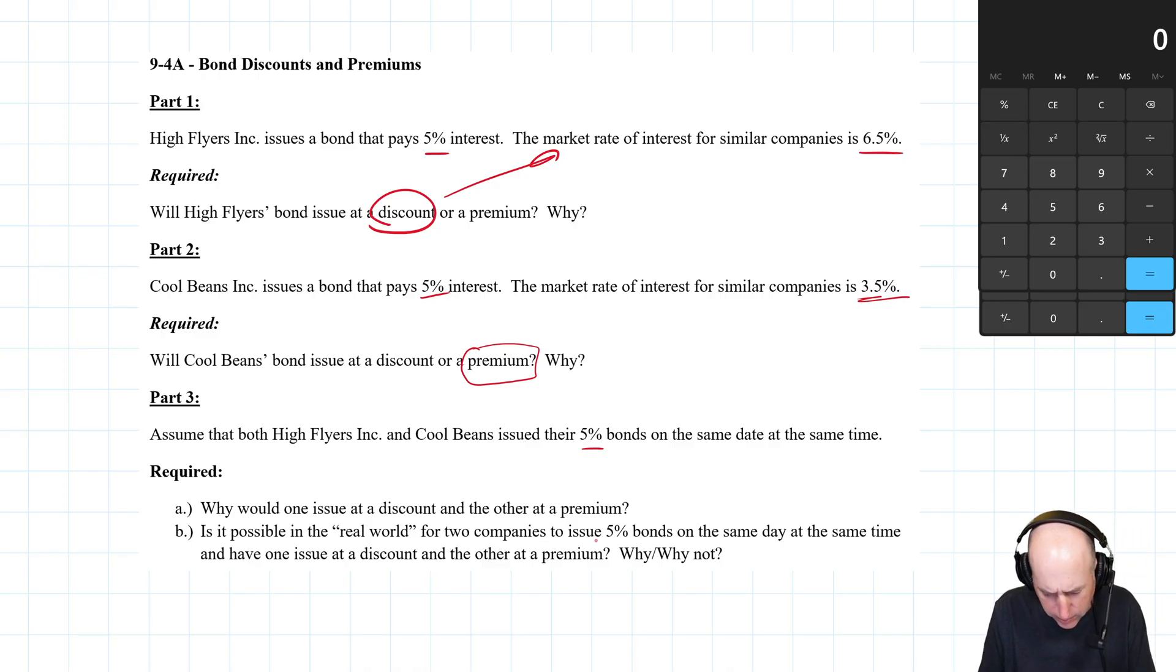Is it possible in the real world for two companies to issue 5% bonds on the same day, same time, and have one issue at a discount and the other a premium? Why or why not?